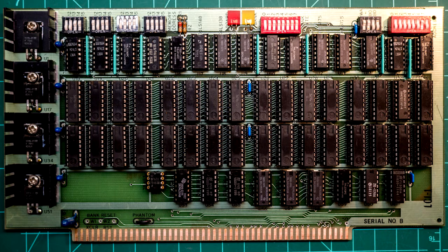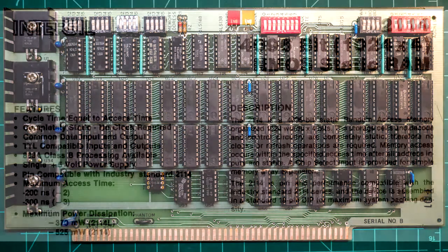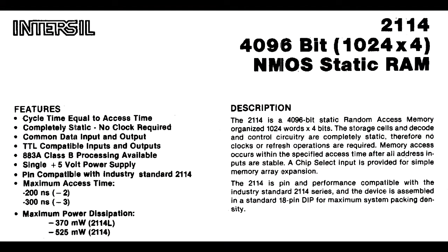The RAM chips used on this particular card were pretty popular back then — they're 2114s. They're organized as 1000 by 4-bit, so you would need two of these chips for an 8-bit byte, meaning you have to use them in pairs. It would take one pair of chips for 1k, so you would need 16 pairs for 16k. If you go back and count the number of chips on that board, there are 16 pairs — 32 chips total.